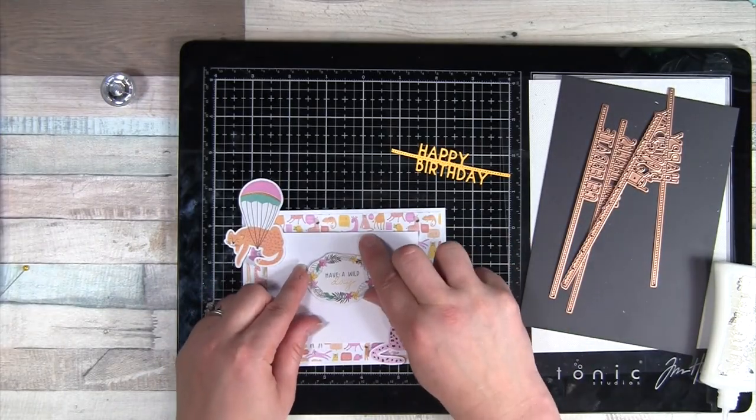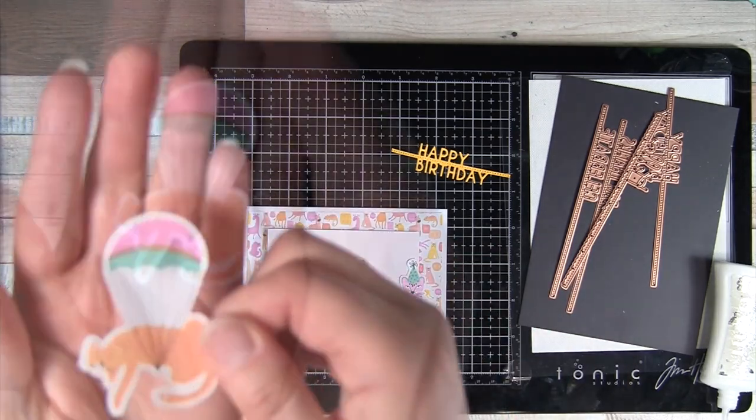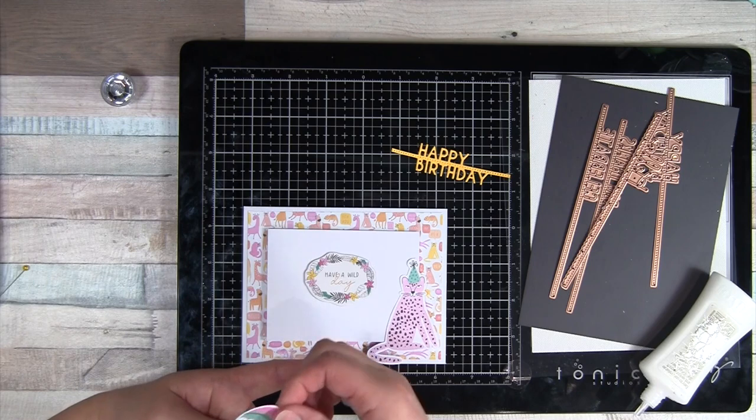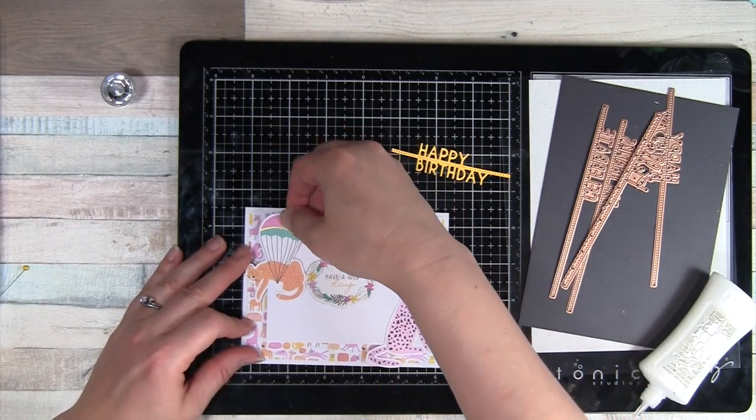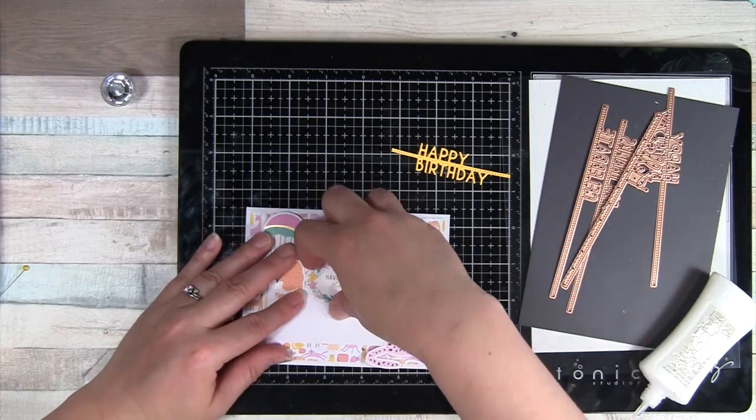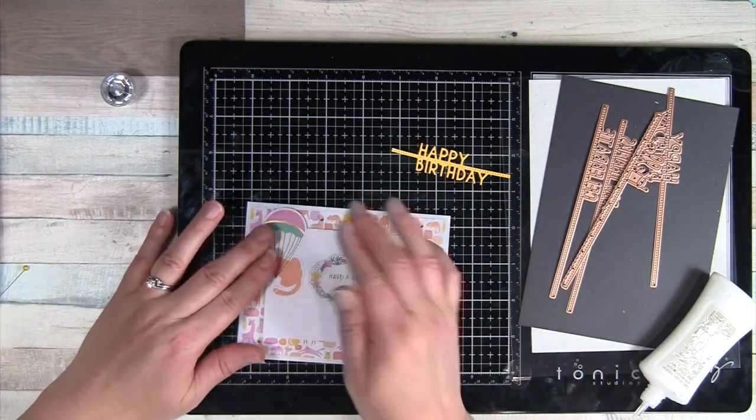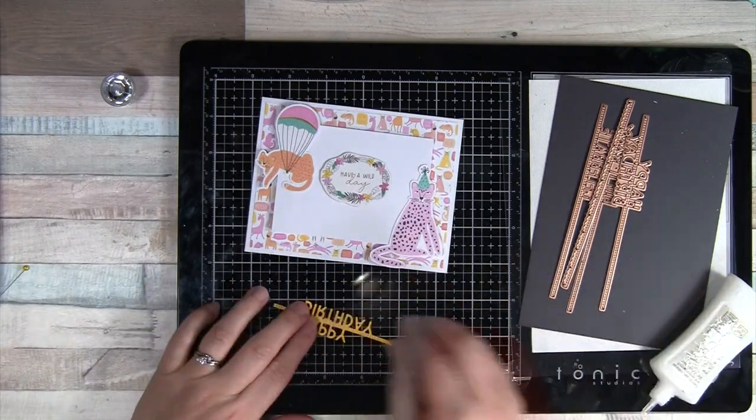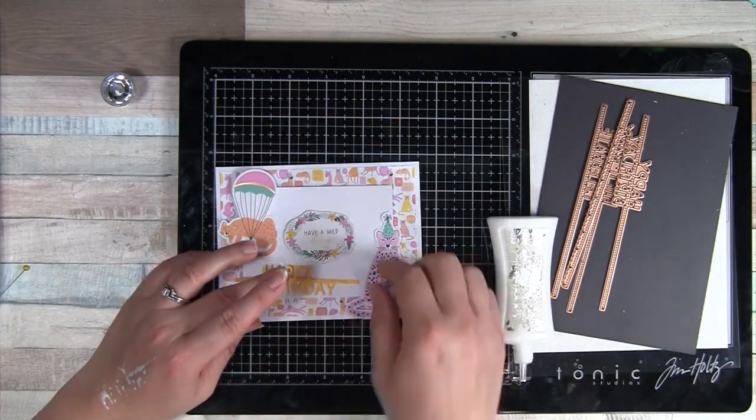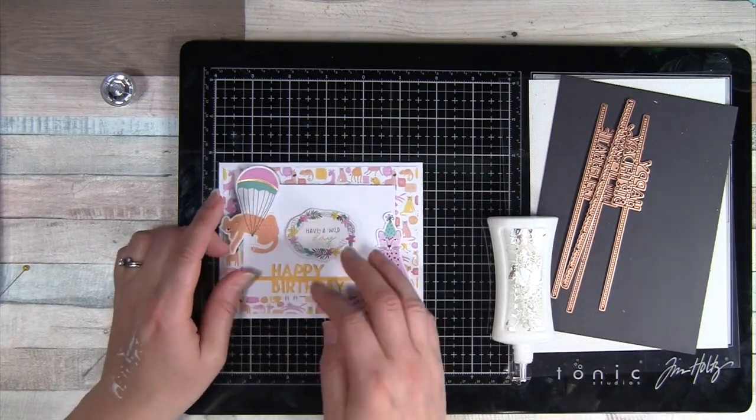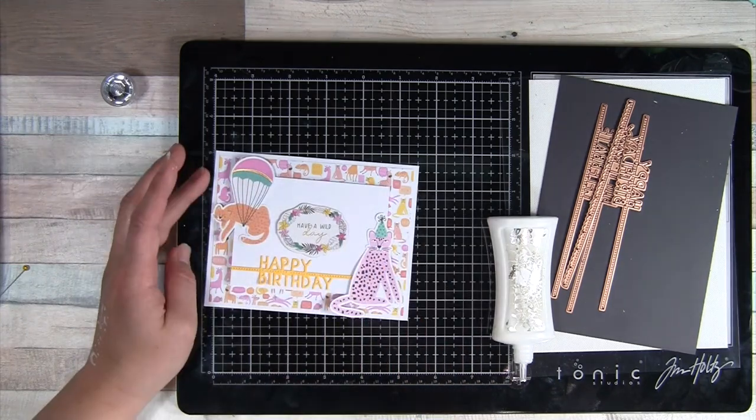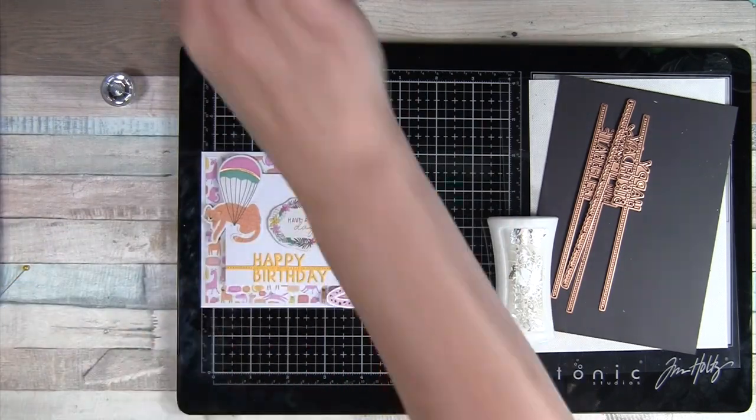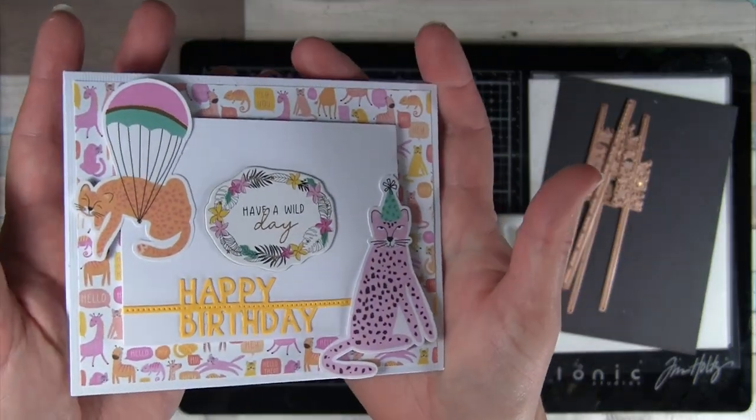Then I have the chipboard sticker, have a wild day. I'm trying to center that, but I think I end up moving it a little bit. Another cheetah is coming down on a balloon or something. Again, mostly liquid glue because it's going over that panel that's already got dimension, but then a little foam square for the parts that go off of that panel. I took the die and cut it out of the yellow cardstock, the happy birthday die. I was going to try to have the horizontal line going across the whole card, but I decided not to do that. So it's just going across the dimensional panel there, mopping up my excess glue and trimming off a tiny bit that overhangs. That's it for card number four.